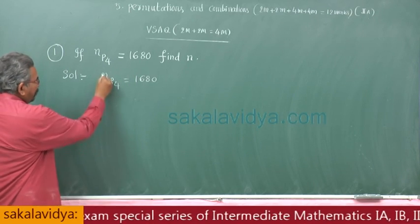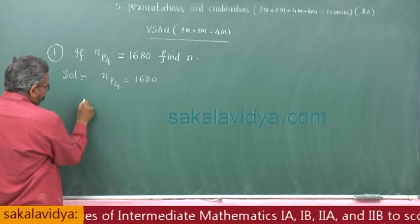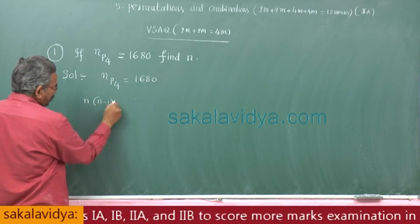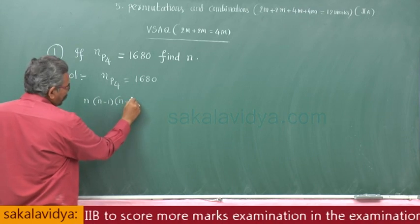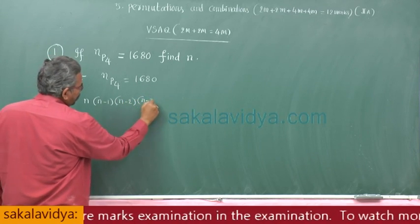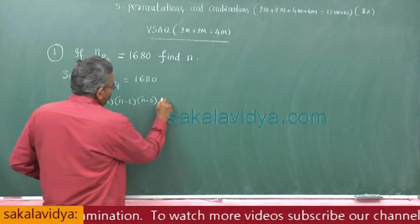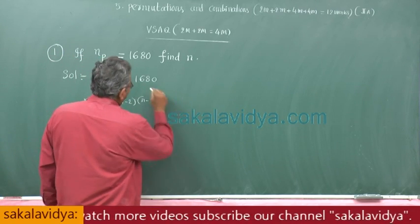Now this nP4 can be written: first place n ways, second place is n minus 1, third place is n minus 2, fourth place is n minus 3, am I correct? This is equal to 1680.